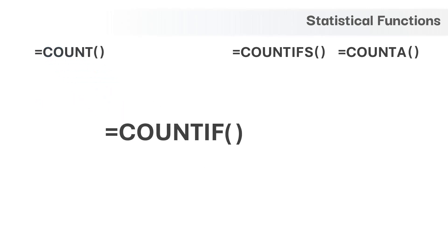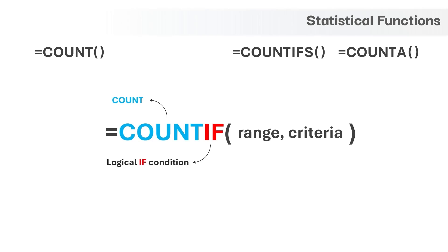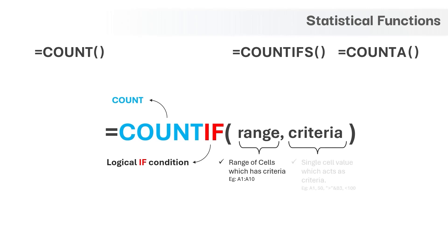Next is the COUNTIF function and it has only two mandatory arguments. This function name has two elements: COUNT with the literal meaning of counting, and IF which is a logical condition. So basically, this function will count the number of records which meet certain criteria. The first input required is a range of cells to count something, and the second input is a criteria which must be part of the range input.